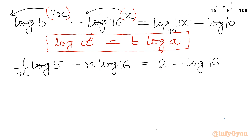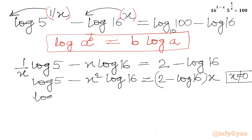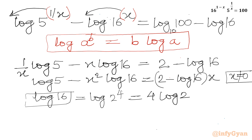Now I will multiply this equation by x, since x is non-zero. So I can write: log 5 minus x squared times log 16 equal to (2 minus log 16) times x. Now I will write the value of log 16: it equals log 2 power 4, which using the same property gives 4 log 2. So log 16 is 4 log 2. Let us replace.